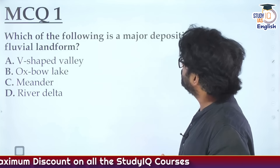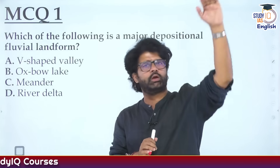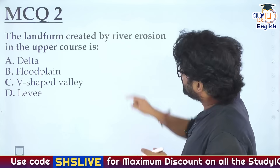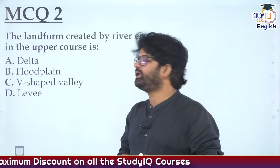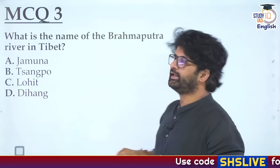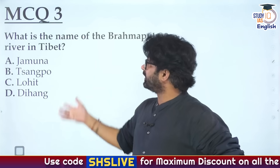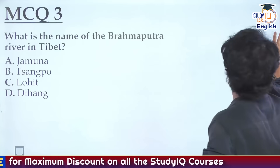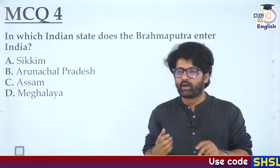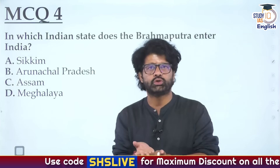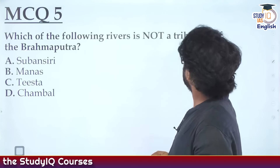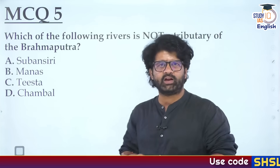Now six MCQs. MCQ1: Which of the following is a major depositional fluvial landform? MCQ2: The landform created by river erosion in the upper course - delta, floodplain, V-shaped valley, or levee? MCQ3: What is the name of Brahmaputra in Tibet? MCQ4: In which Indian state does Brahmaputra enter India? Note: many people have the misconception that Assam is the largest northeastern state - the answer is Arunachal Pradesh.